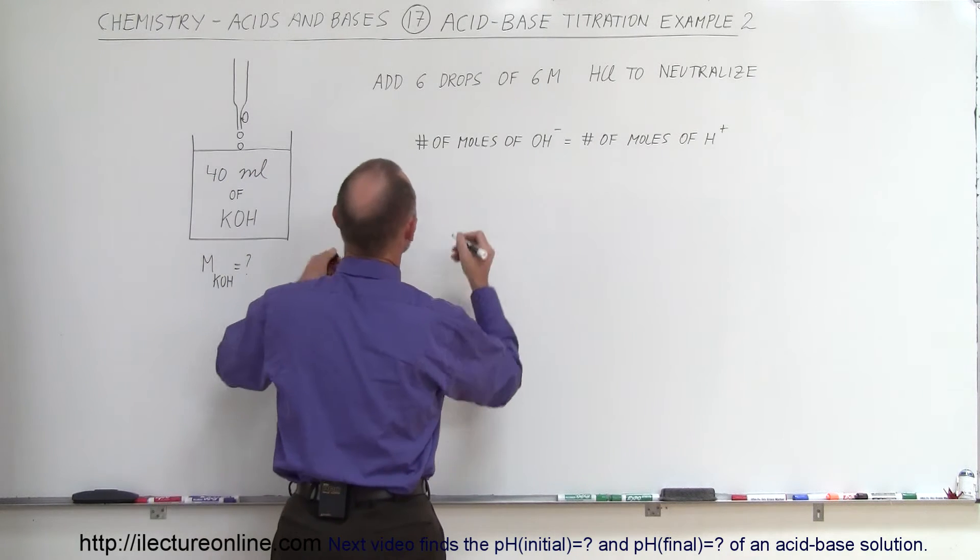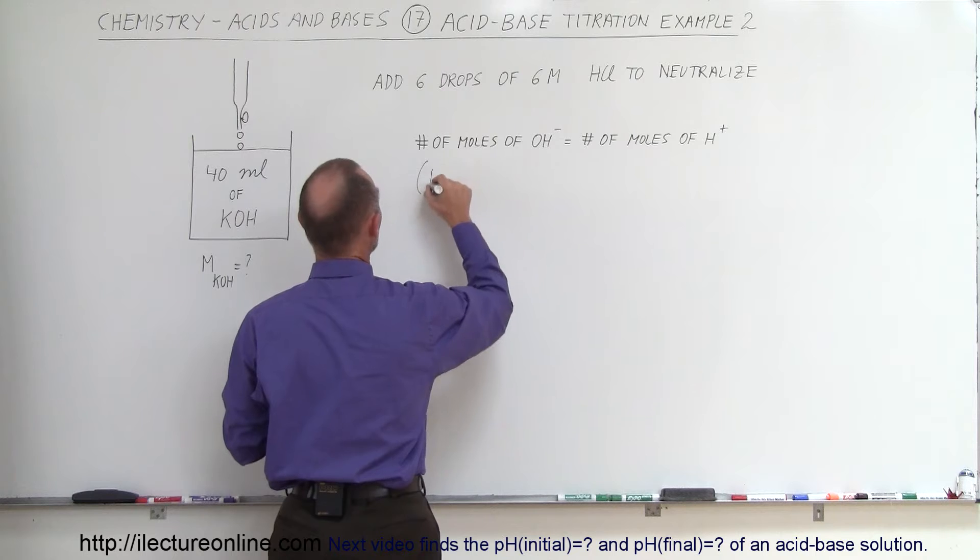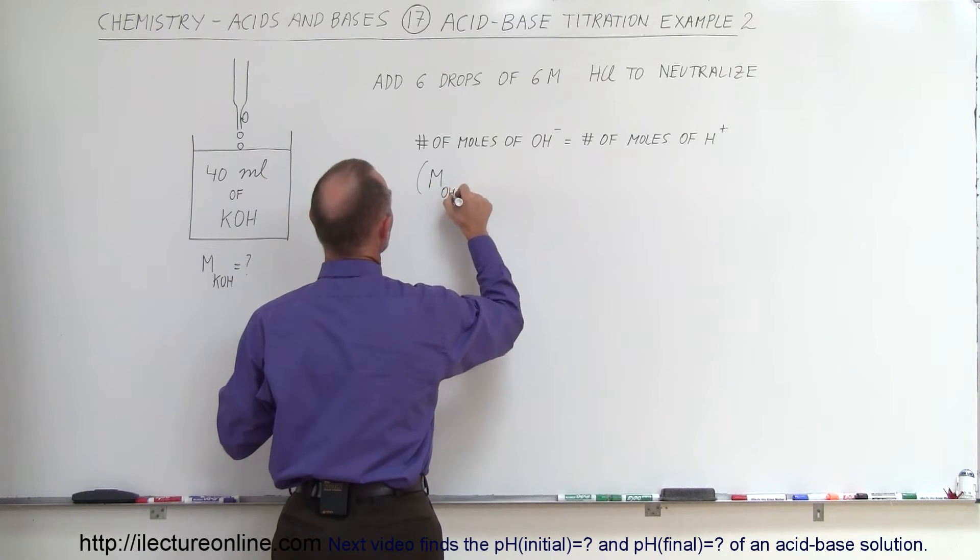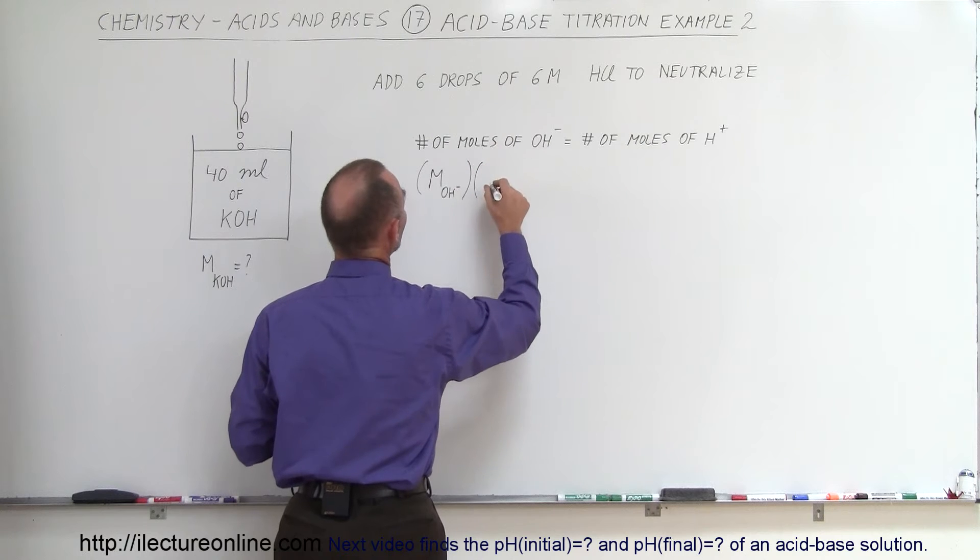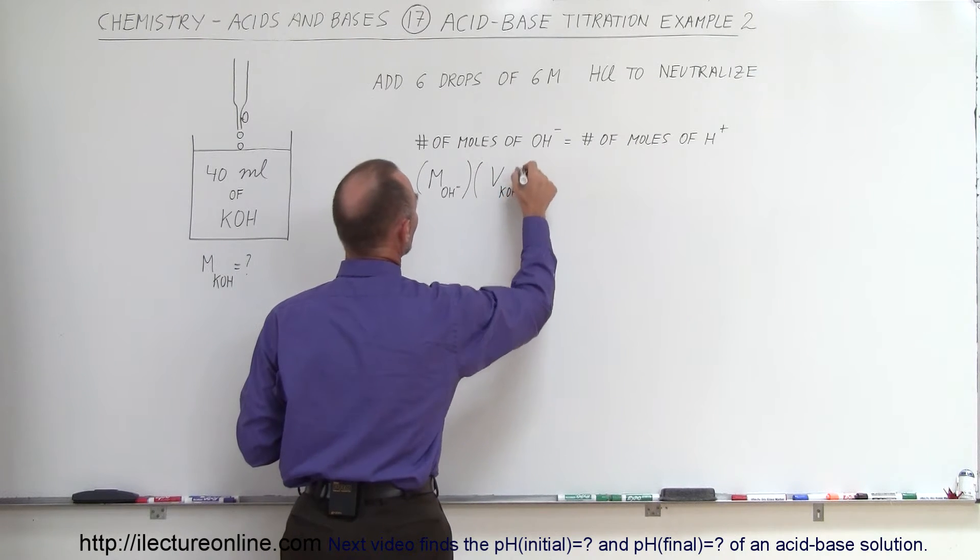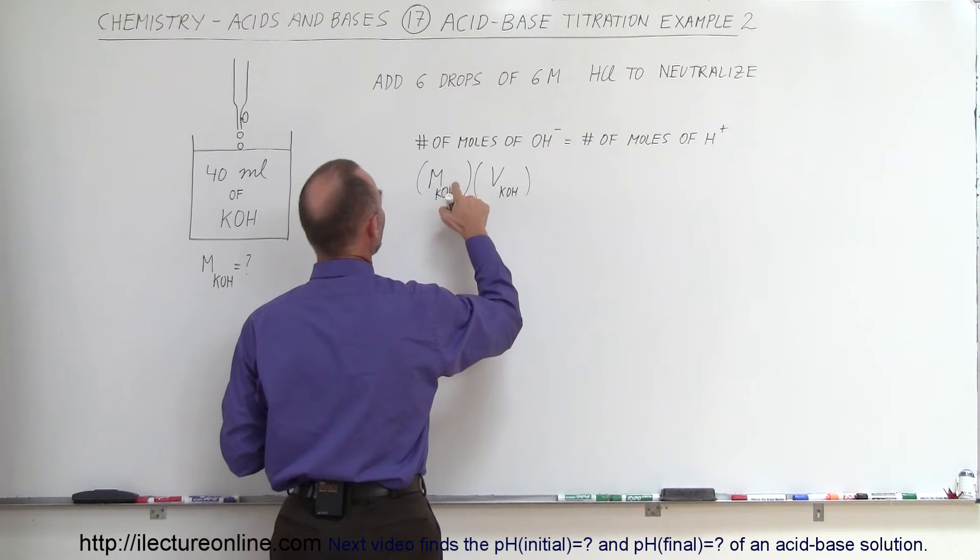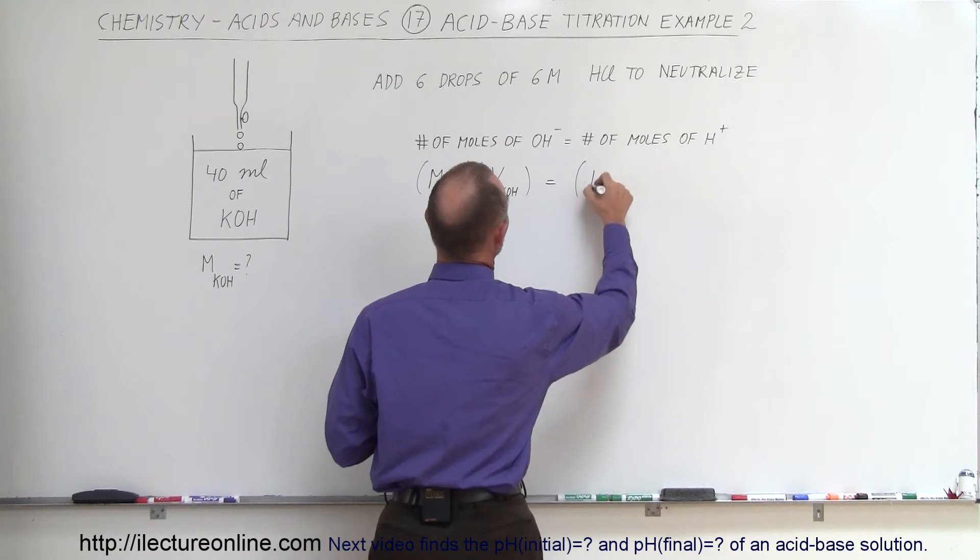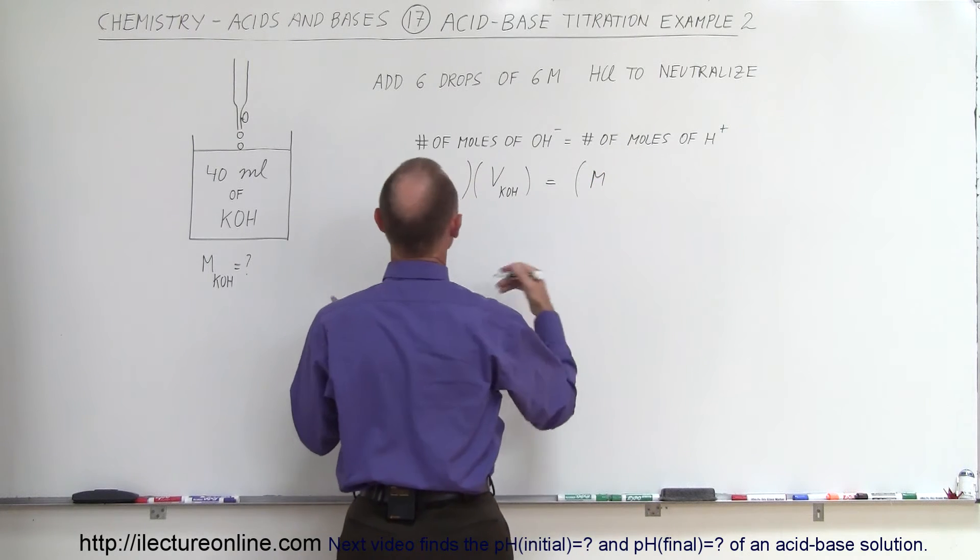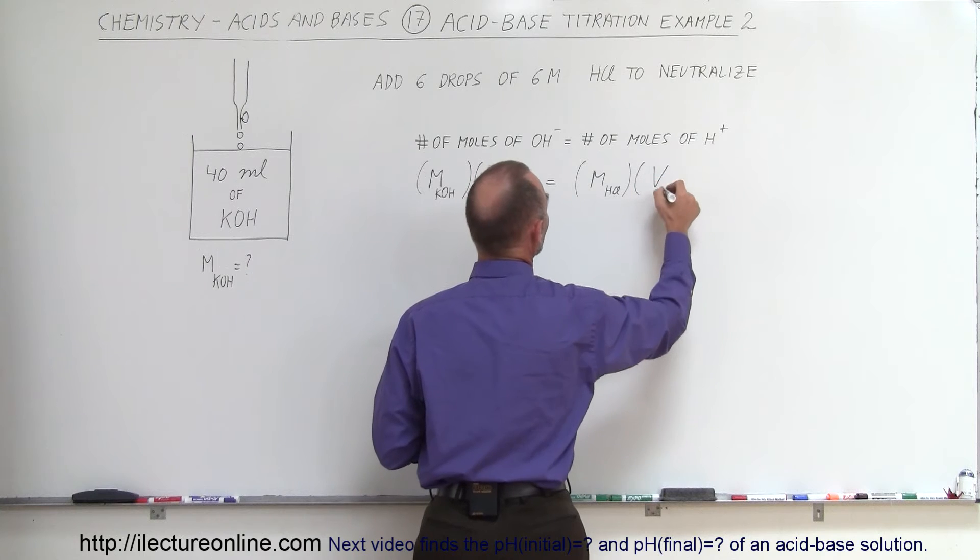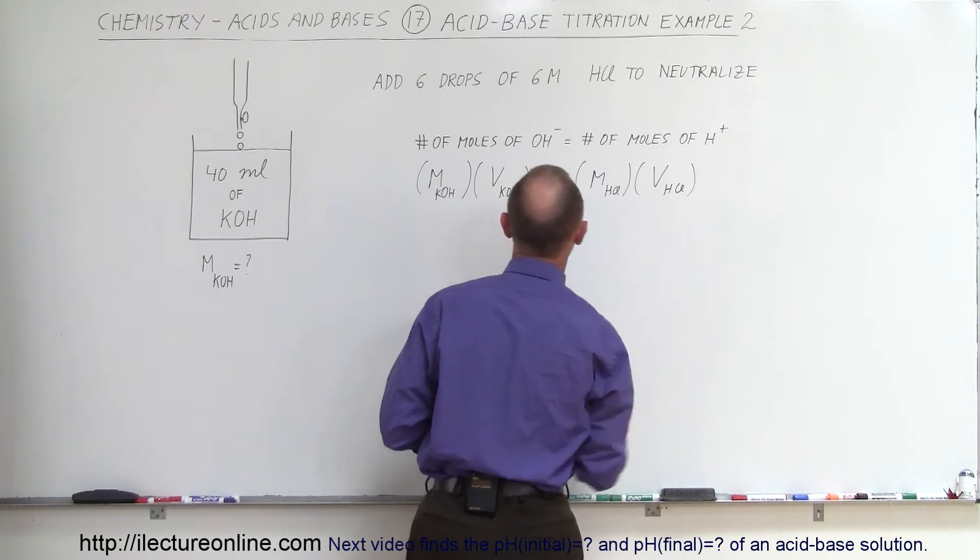We then simply multiply the concentration, the molar concentration of the hydroxide ion in the solution, times the volume of the potassium hydroxide solution, and that equals the molarity of the hydrogen ion being added, so the molarity of the hydrochloric acid multiplied times the volume of the hydrochloric acid that we added.